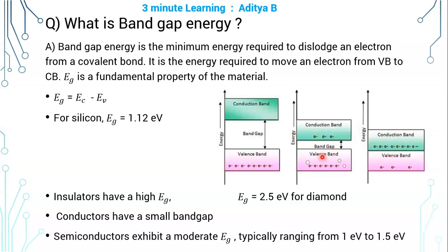Semiconductors have a moderate EG, typically ranging from 1 eV to 1.5 eV. As the name suggests, their band gap is in the middle of band gap of insulators and conductors.